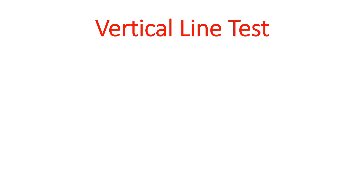How about if the given is a graph? How will we know if it is a function? We will be using the vertical line test. That is, once you draw a vertical line on the graph, it must intersect the graph at exactly one point only for it to be considered as a function. Otherwise, it's not a function.